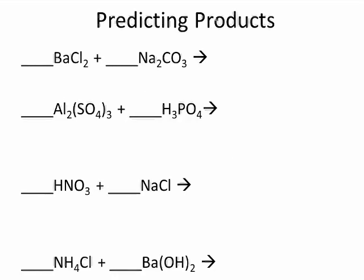Now we're getting more difficult. We can probably guess that this is going to be a double replacement or double displacement reaction. That means the positive replaces the other positive, the negative replaces the other negative — they just swap partners. We have barium swapping with sodium, and chlorine swapping with carbonate. We need to recognize those polyatomics.